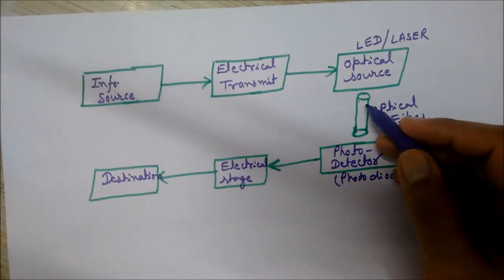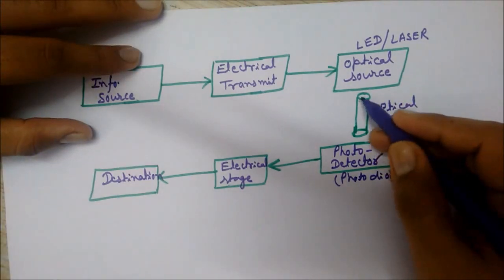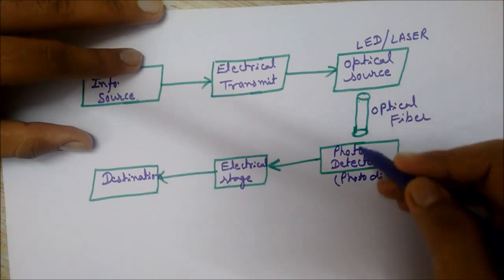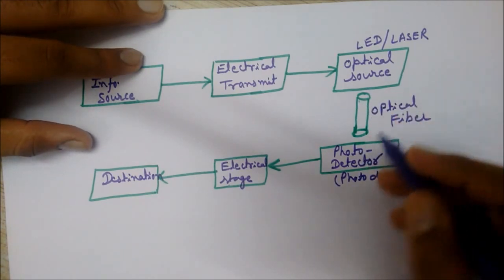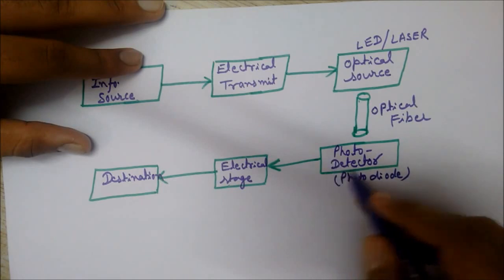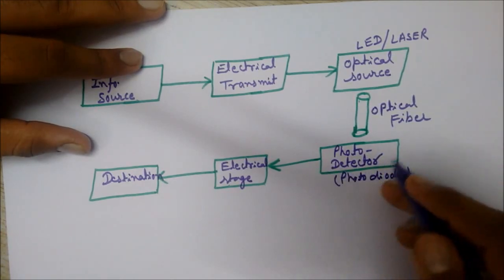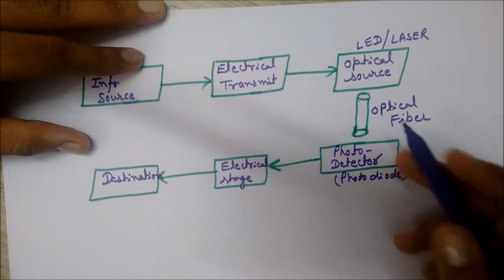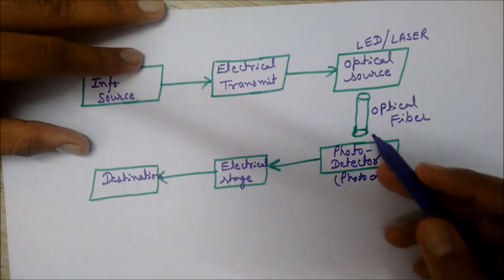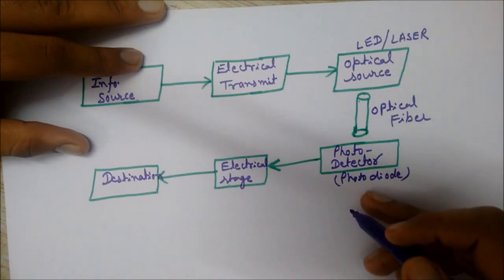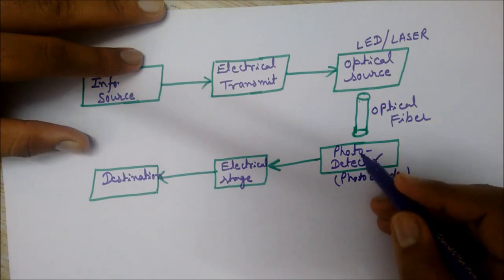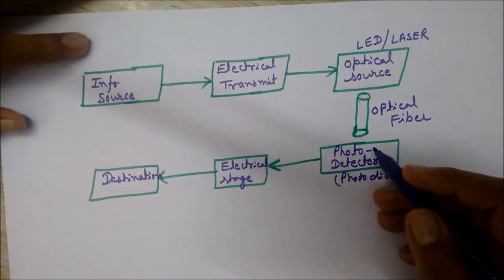It reaches the receiving end and there a photo detector is used to convert these light signals again into electrical signals, as it is sensitive to the photons of light and emits electrons which create electricity.